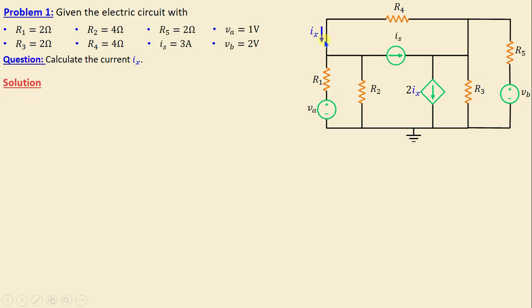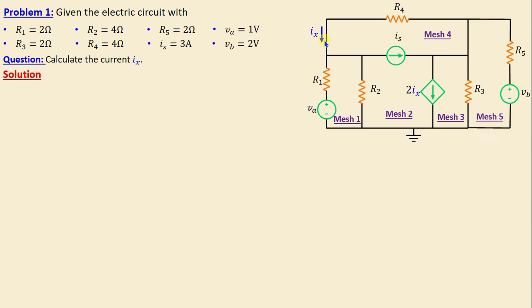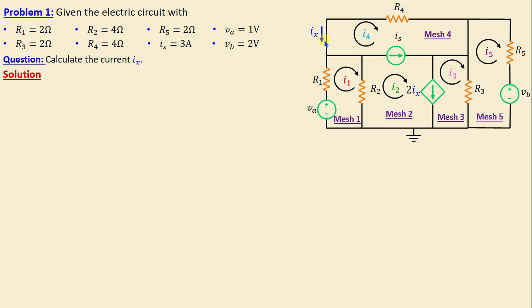Let's move on to the solution. First, let's define the number of meshes in this network. It's evident that there are five meshes: mesh one, mesh two, mesh three, mesh four, and mesh five. We now assign the mesh currents: i1 in mesh one, i2 in mesh two, i3 in mesh three, i4 in mesh four, and i5 in mesh five. All mesh currents are chosen in the clockwise direction.